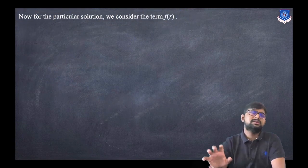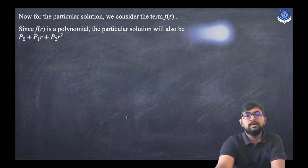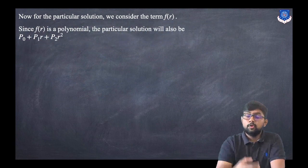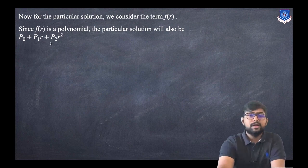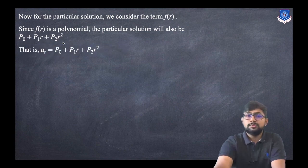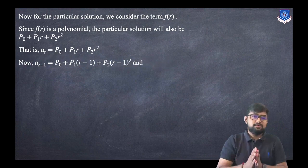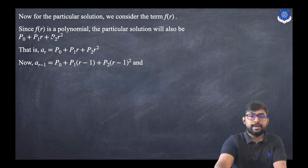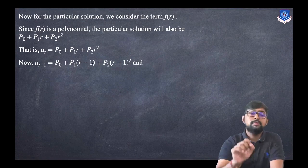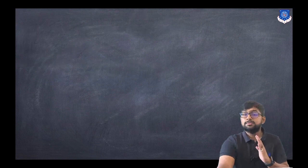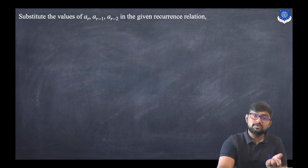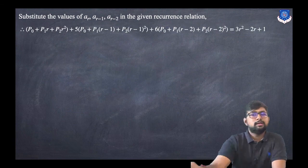The right-hand side is a polynomial, so the choice of particular solution is a(r) = p0 + p1·r + p2·r². Then a(r−1) is obtained by replacing r with r−1, and a(r−2) by replacing r with r−2. Substituting all these values into the given recurrence relation and solving, we equate the coefficients of r², r, and the constant terms.